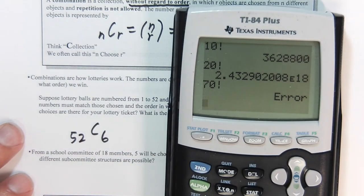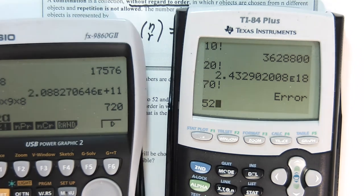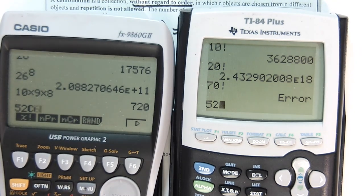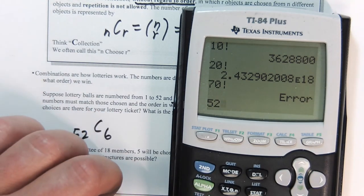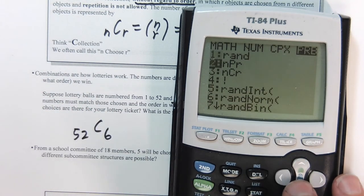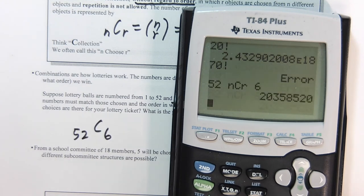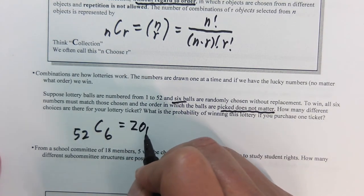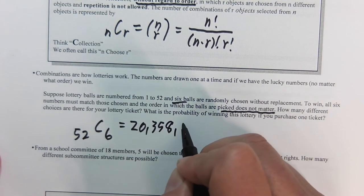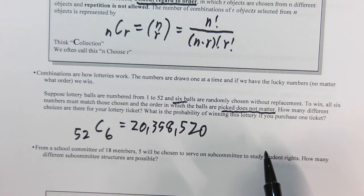Once again, I have to type in the 52 first. Casio, you don't have to do anything. It's right there. So 52, choose 6. TI, you're going to have to dig it out each time. So you're going to have to go math, probability, choose, and then 6. That gives us a massive number. 20,358,520 to one are your probability of winning. So quite low.